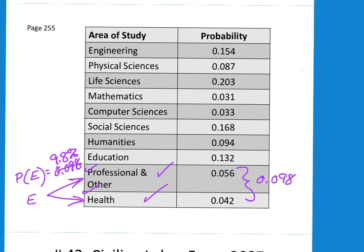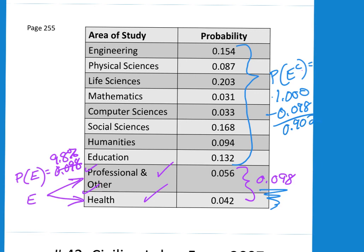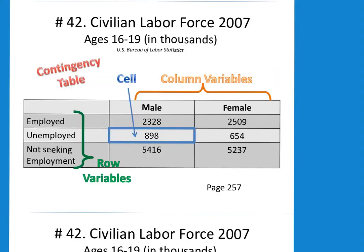So what is the likelihood that it will not occur? Everything else would be the complement of E. So the probability of the complement of E, we could add all those up, or since we already did the work down here we could just say 1.000 minus 0.098, and that gives us 0.902. So 90.2% of all college majors study something other than professional and other or health. Time flies when you're having fun. We will finish in part C of this video series.